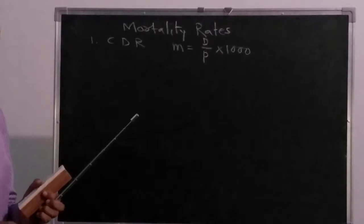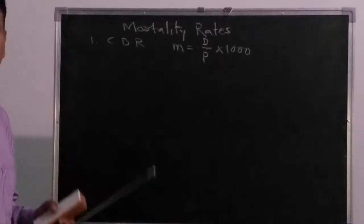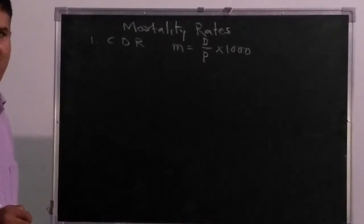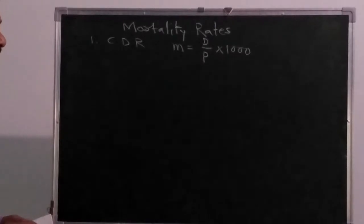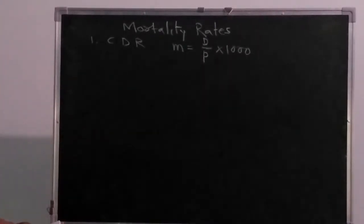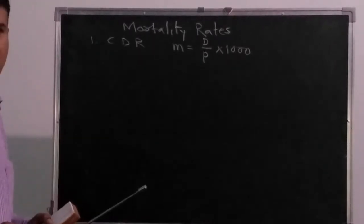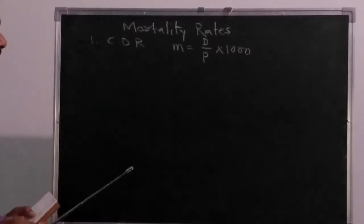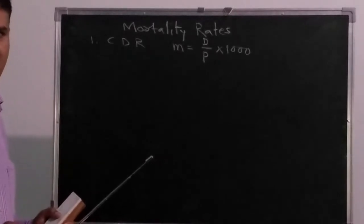CDR is a crude measure of mortality rate, but it is an important measure because the deaths in a particular population can be understood using crude death rate. However, there are some limitations of CDR.